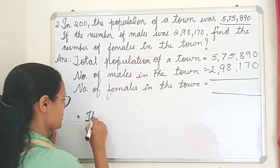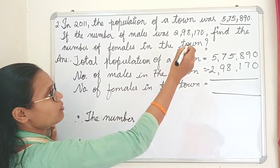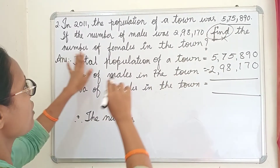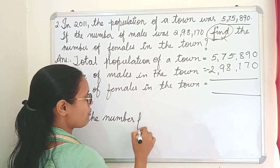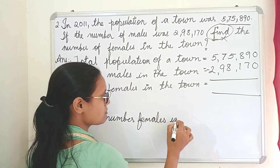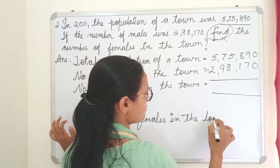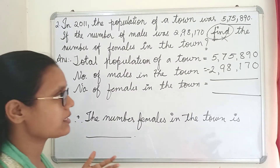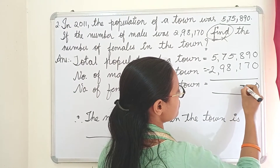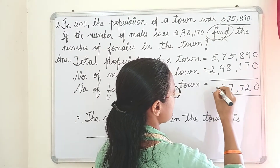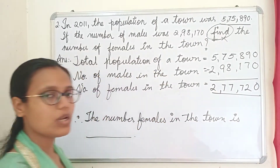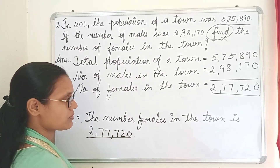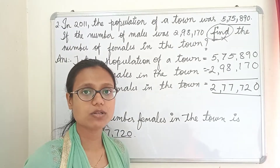The final statement: therefore, the number of females in the town is whatever answer you get. Solving the subtraction: 5,75,890 minus 2,98,170 gives us 2,77,720. That is the number of females in the town.